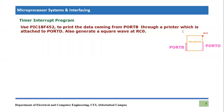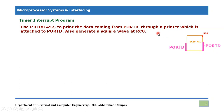Let's read our problem statement. We are asked to use the PIC18F452 microcontroller to print data coming from Port B through a printer connected to Port D. Port B is used as an input port and Port D is the output port connected to the printer. Furthermore, we also need to generate a square wave at RC0.